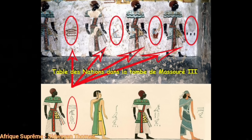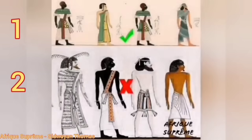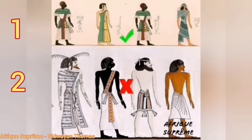Nous allons maintenant observer les différentes tables des nations utilisées dans les documentaires sur l'Égypte ancienne et sur certains sites internet pour falsifier son histoire. Sur cette image, nous avons deux tables des nations. Avec la connaissance que nous venons d'acquérir, nous pouvons voir tout de suite que la deuxième table est une falsification, parce qu'un personnage de couleur blanche représentant les Européens apparaît en premier, avant les Nubiens. De plus, l'apparence physique des anciens égyptiens est complètement différente de celle des Nubiens, ce qui confirme qu'il s'agit d'une falsification.